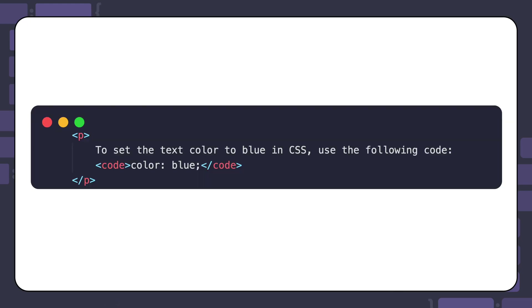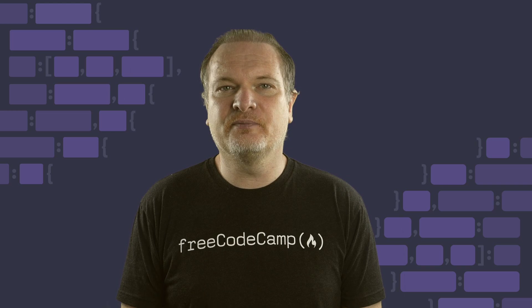Here's an example of using the code element to show a CSS code snippet. In this example, the CSS color property is used to set the text color to blue. By wrapping the code snippet inside code tags, it communicates to the browser that the text is a piece of inline code.